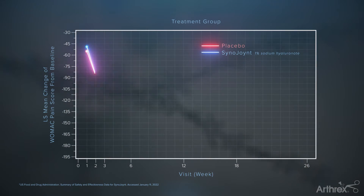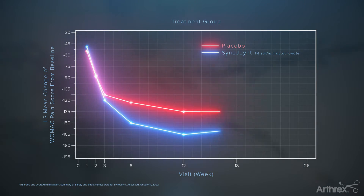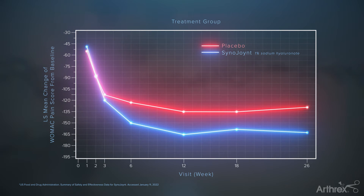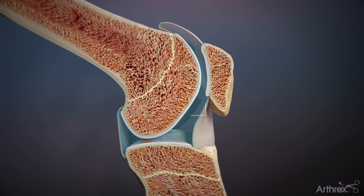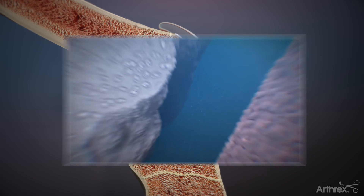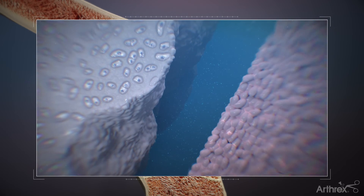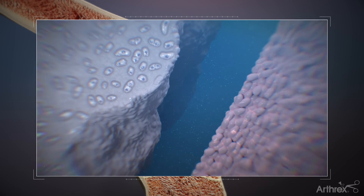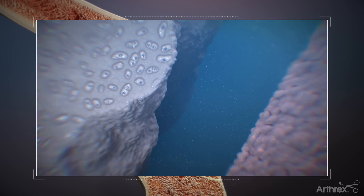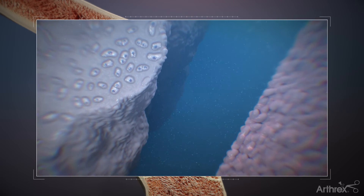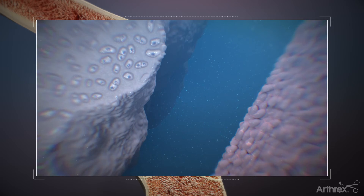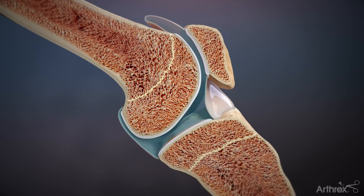Synojoint is shown to significantly decrease WOMAC pain scores through 26 weeks when compared to a placebo. In the joint, Synojoint provides lubrication and proven pain relief for mild to moderate osteoarthritis.